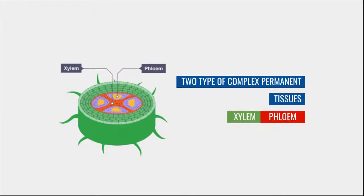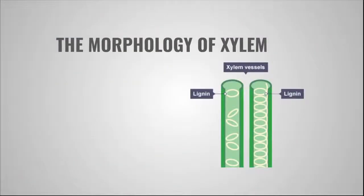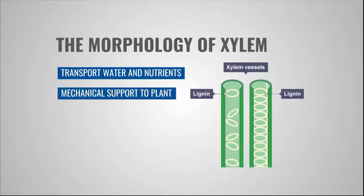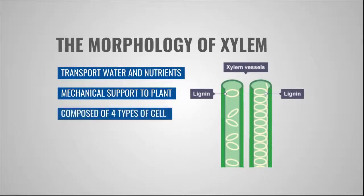From our transportation in plants video, you may already know about these. These tissues are essential for the circulation of water and other important nutrients throughout the plant body. Here in this video, we will talk about their morphology. Let's begin with xylem. The main function of xylem is to absorb water and minerals from soil and transport them to different parts of the plant. It provides mechanical support to the plant as well. Xylem is made up of four types of cells.